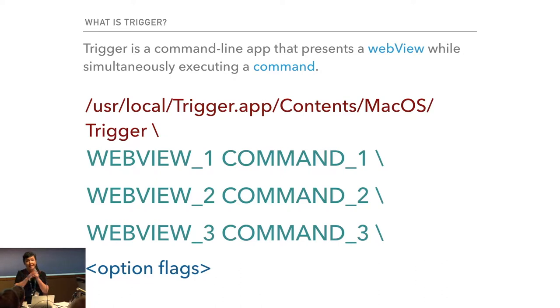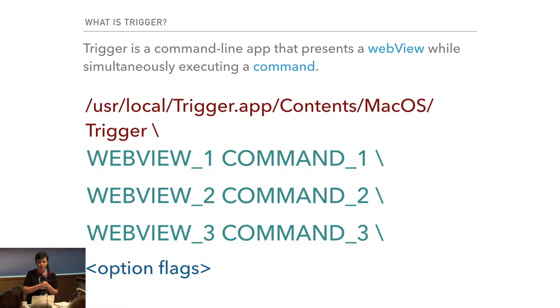At the very basic level, Trigger is a command line app that you can put in a location such as /usr/local. You tell it to present a web view while simultaneously executing a command. That web view and command pair, once the command finishes, jumps to the next web view command pair, and so on. Additional options include full screen or setting the width and height of the web view.